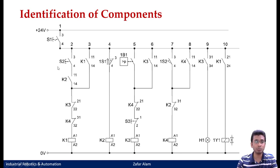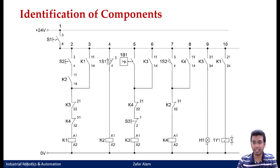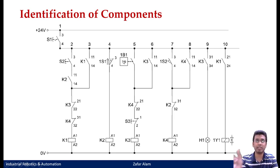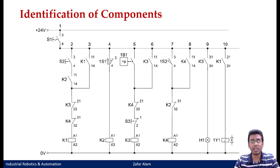Then I have my limit switch — 1S1. I have another limit switch, a normally open type: 1S2. I can identify some relays: K1, K2, K3, K4. I can also identify my lamps denoted by H — H1 means this is only the first lamp. Similarly, I can identify my solenoid valves denoted by 1Y1. I can also identify some pressure sensors denoted by 1B1 — this pressure sensor is associated with one of my pneumatic cylinders. So these are the different types of components in this circuit.